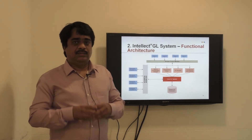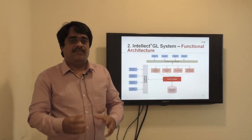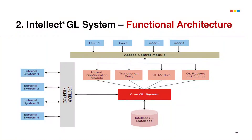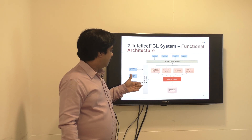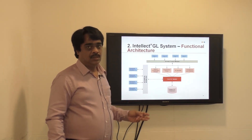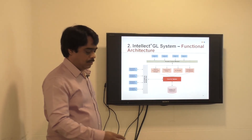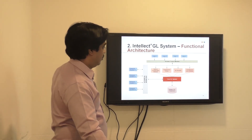The system also interfaces with external systems. There are many external systems such as RTGS, NEFT, and SWIFT, which also require access to our general ledger. So the general ledger can be used for interfacing with different systems, and you can have a dedicated interface for each particular external system as well.